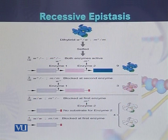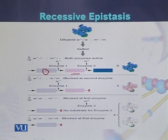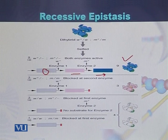We can understand how the colorless precursor is converted into magenta or blue color. If both enzymes are active, the product is converted into magenta or pink color first, and then it is converted into the blue color, so the color of the flowers will be blue.